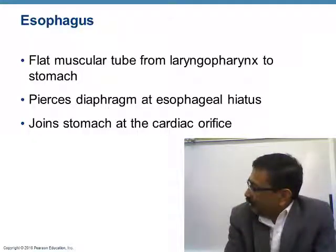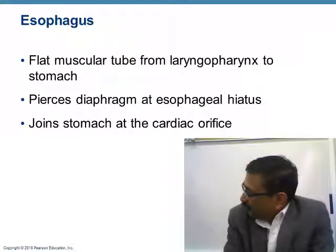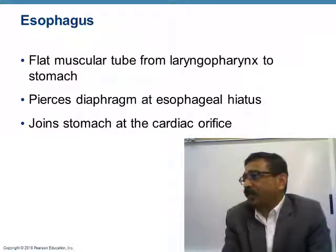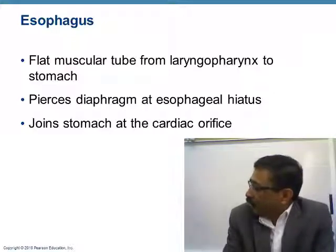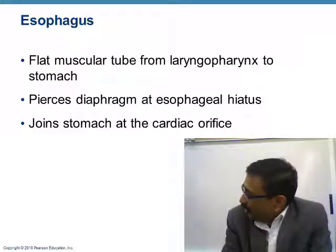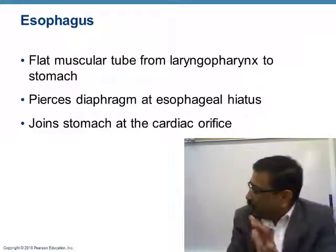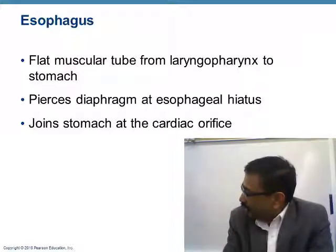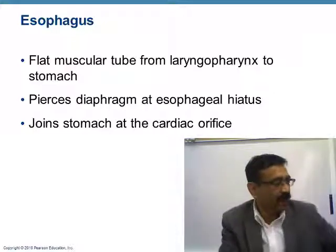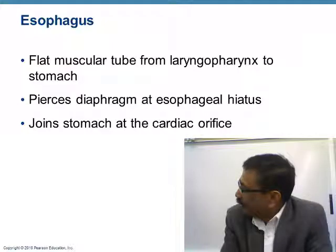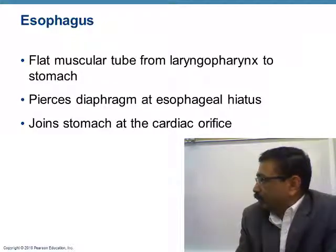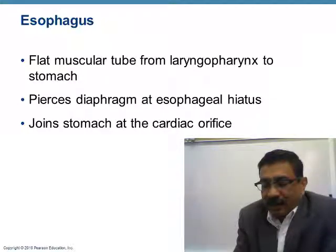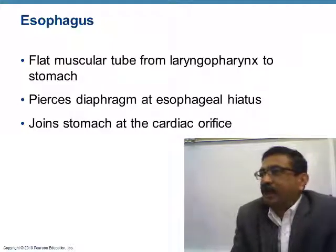The esophagus is the narrow tube that takes the food from the pharynx to the stomach. We will first talk about the esophagus, then the stomach, then the small intestine, large intestine, liver, and other organs of the digestive system. The esophagus is a flat, narrow, muscular tube from the laryngopharynx to the stomach.